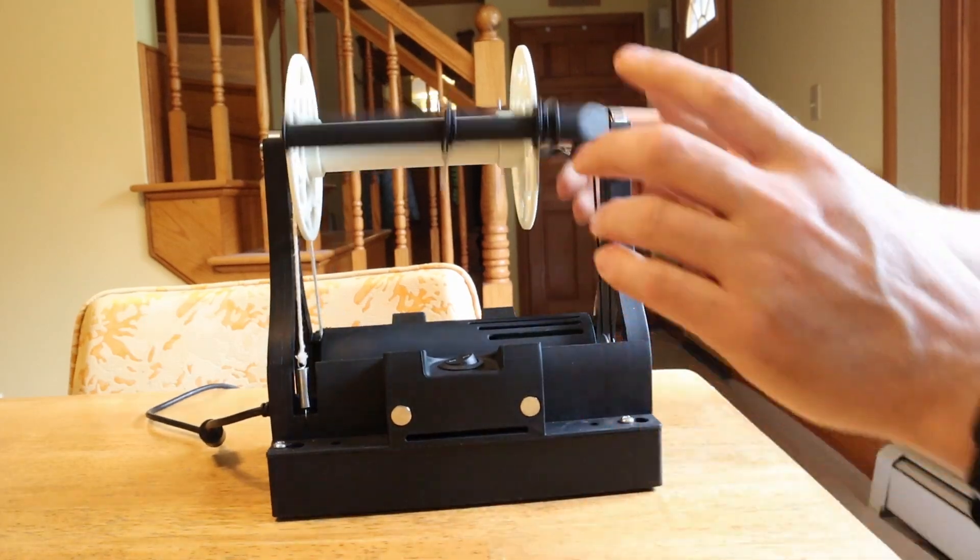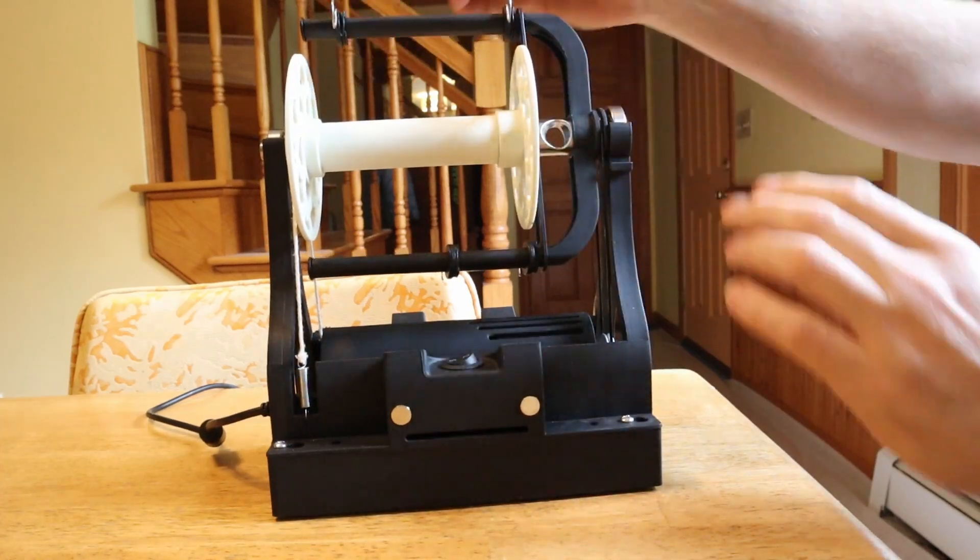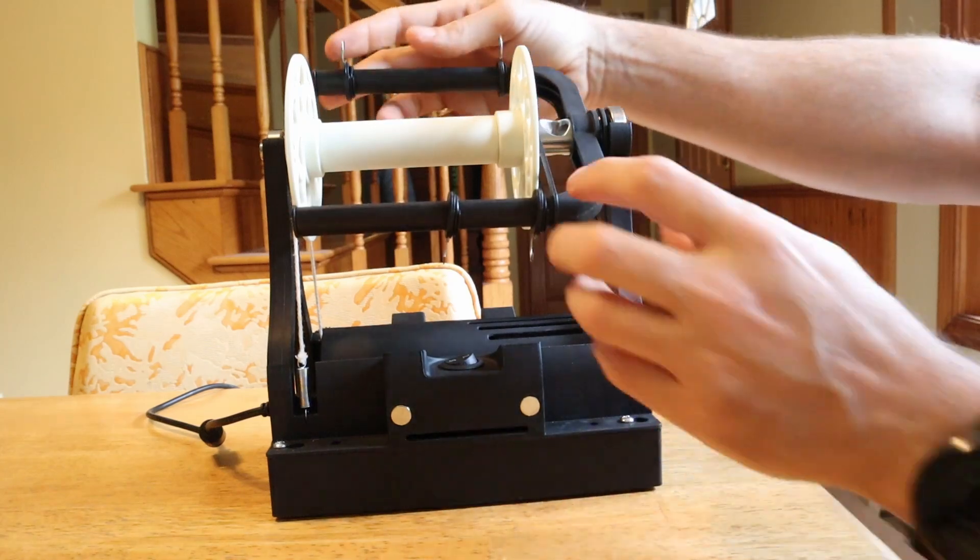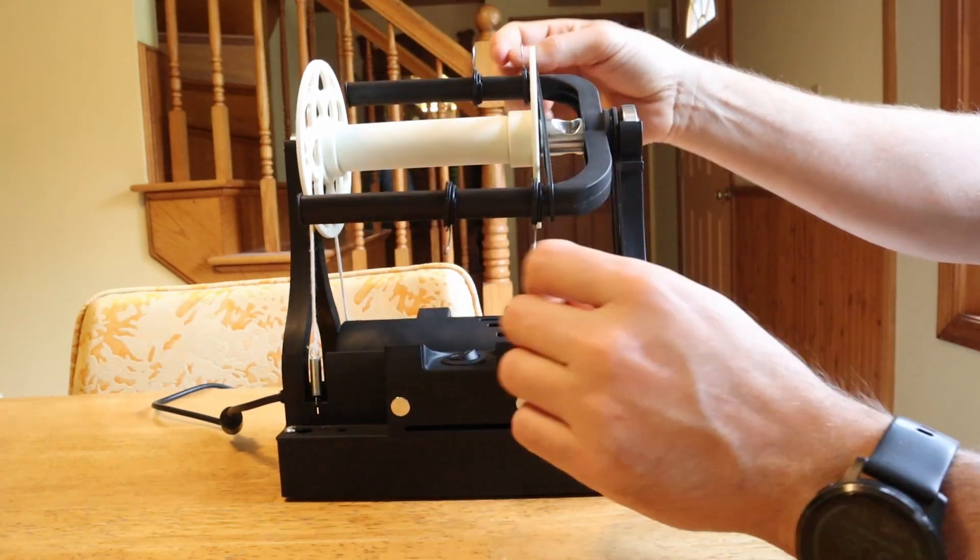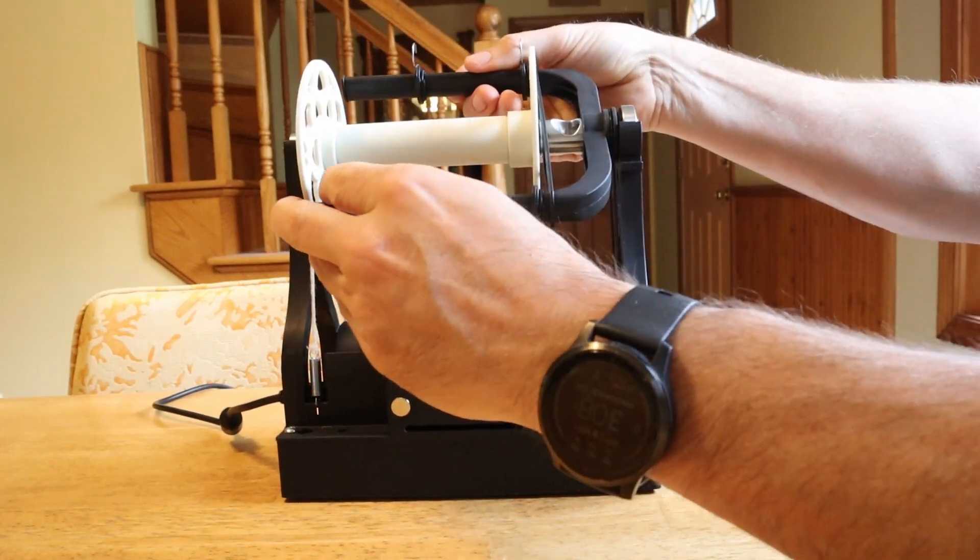First off you want to make sure that your hooks are directly across. If you have one hook that's significantly out of line with the other hooks that's going to cause more vibration. So you want to get them as close to in line and then when you move this hook with yarn you want to move this other hook as well.